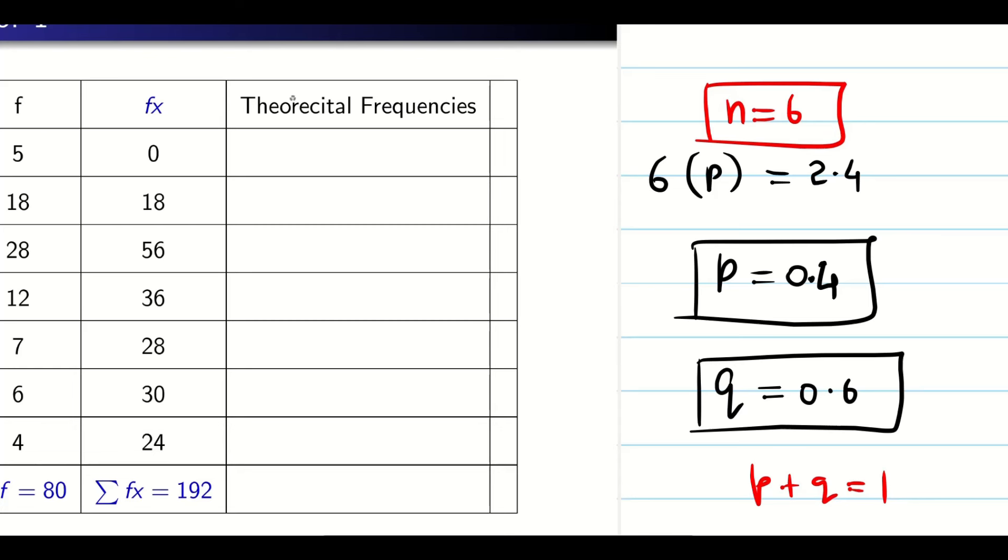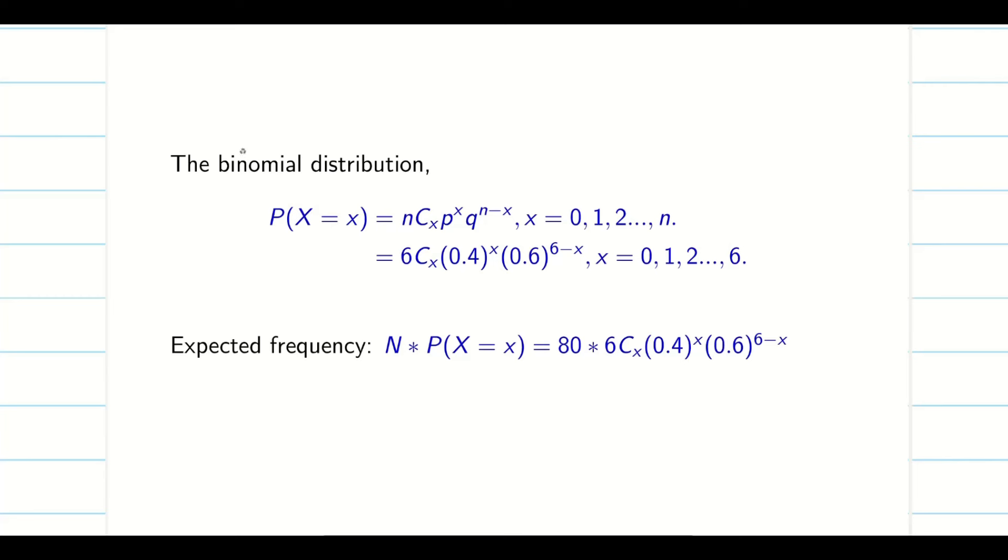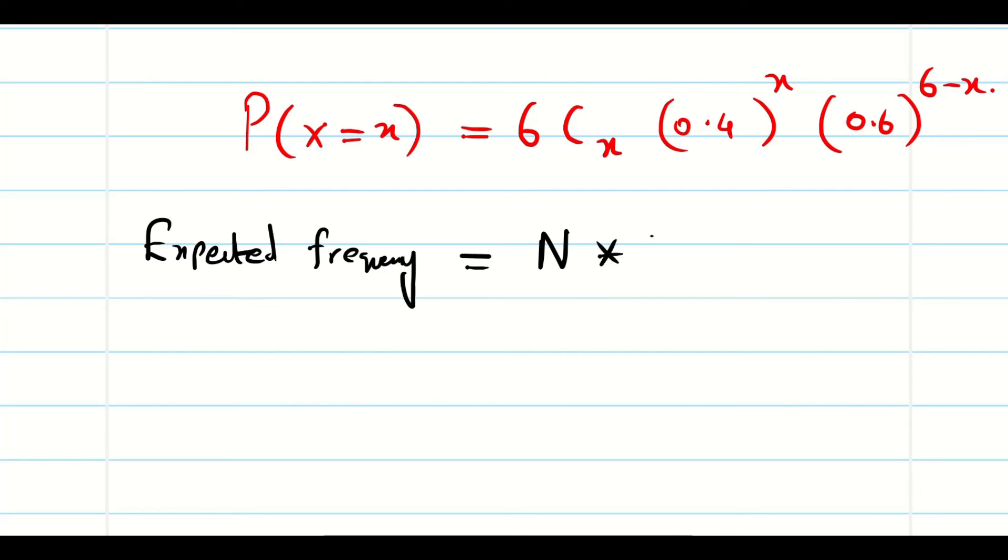I will take a new page and I will write. So probability of X is nothing but N is 6, 6CX, P is 0.4 power X, Q is 0.6 power 6 minus X guys. Now I want the expected frequency, right? This will complete your problem. I need the expected frequency. So it is capital N into probability of X equal to X.